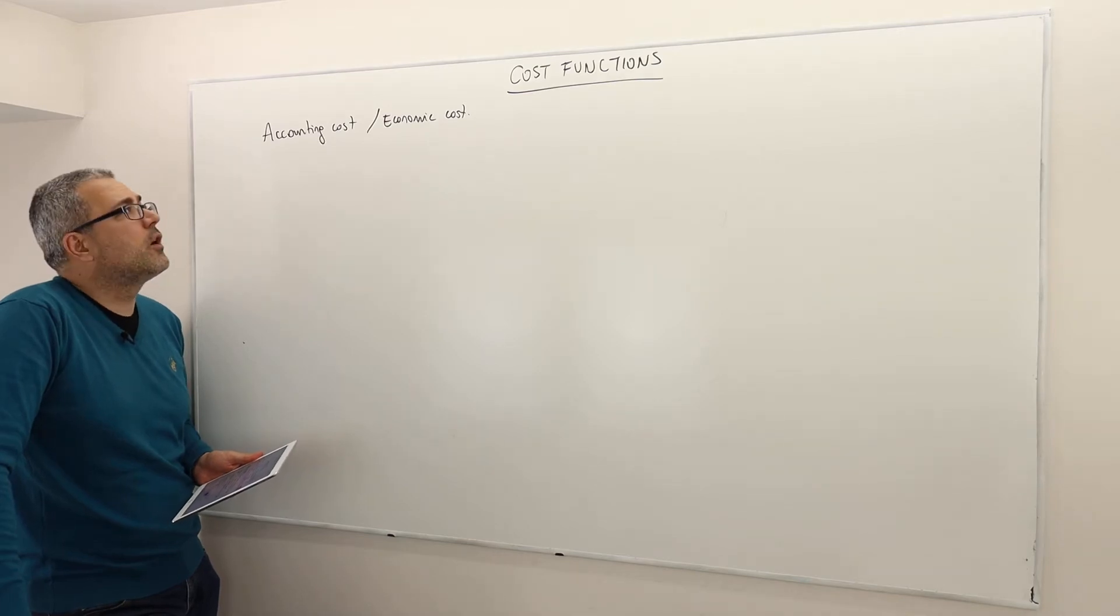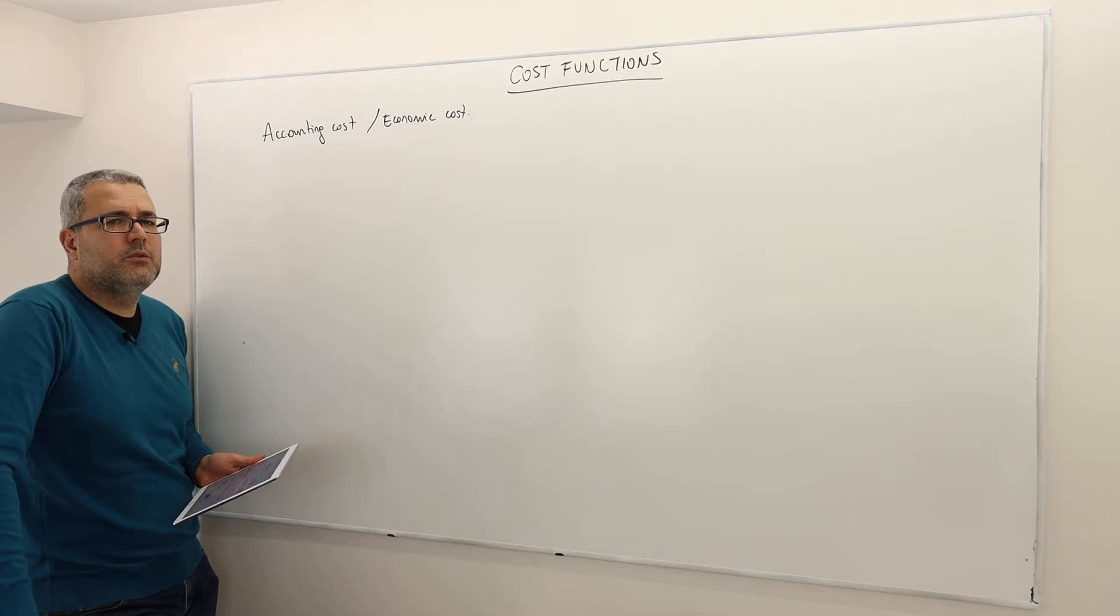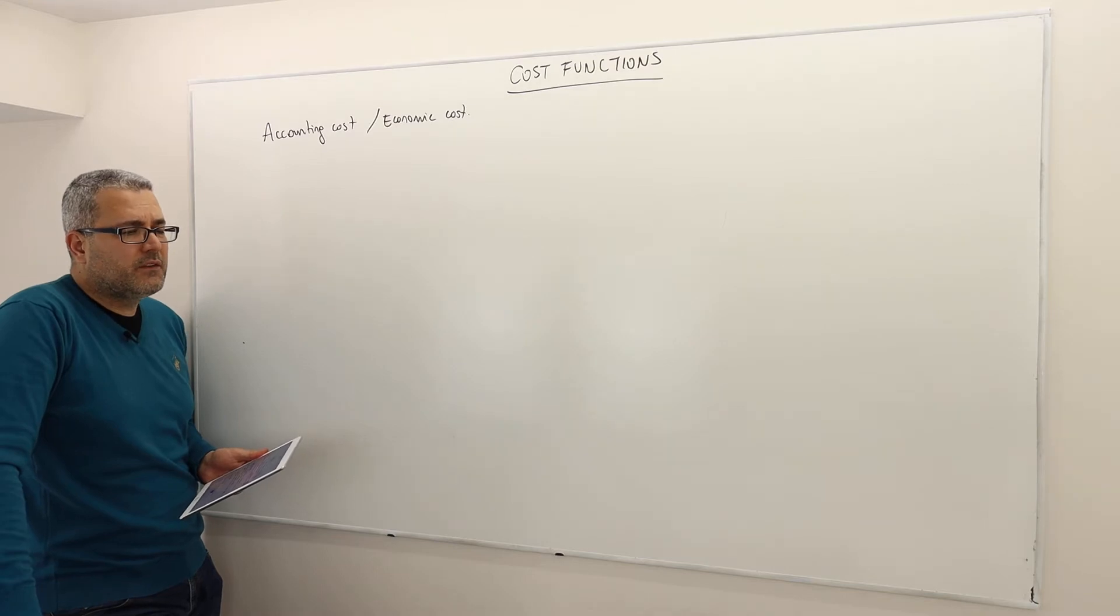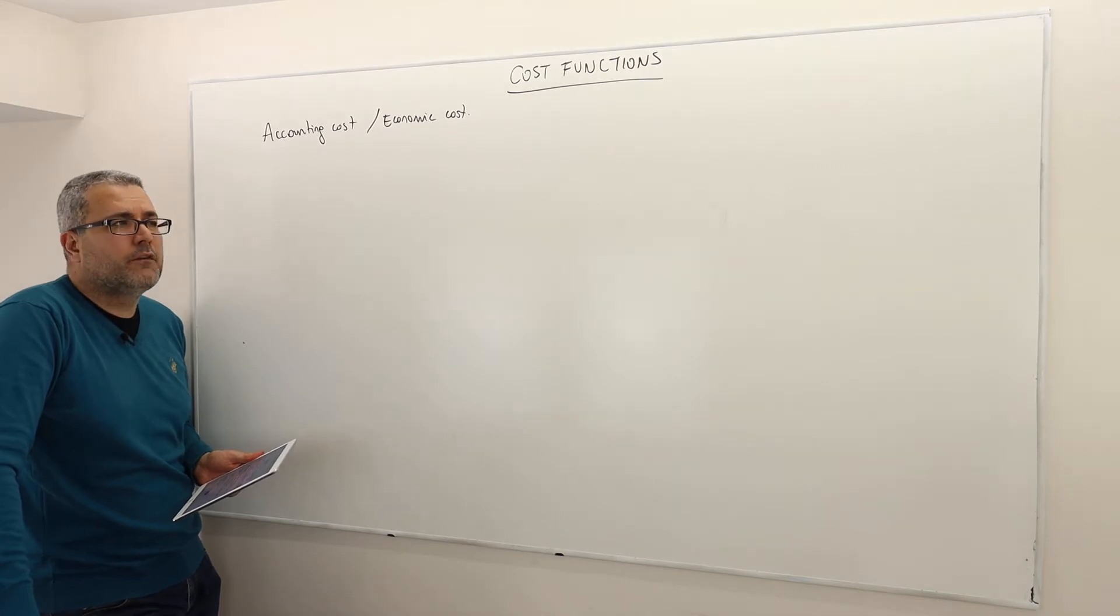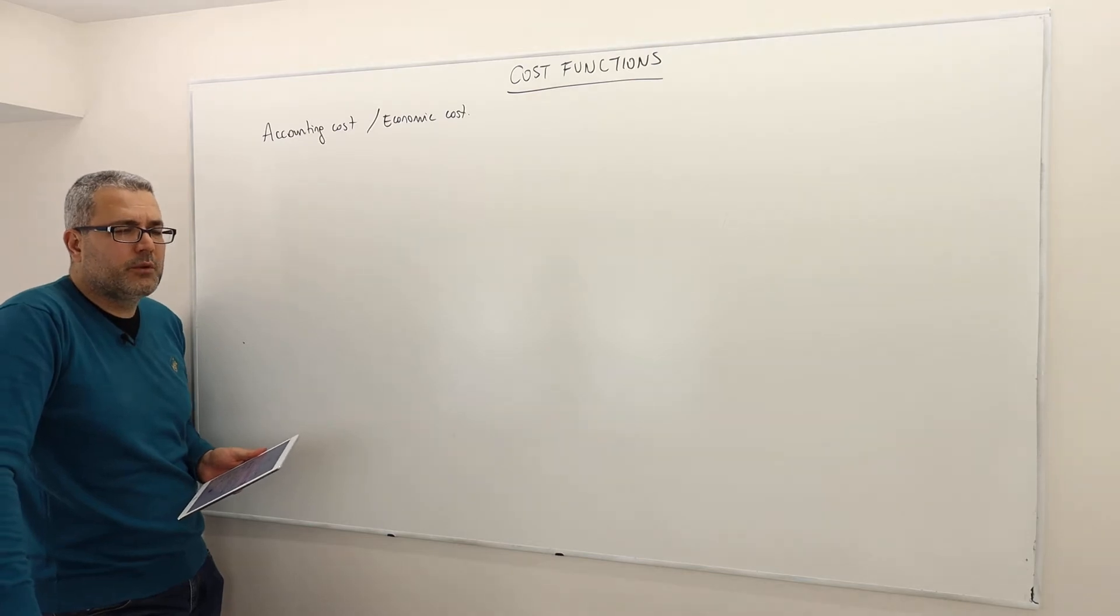But what about economic cost? Economic cost is always higher than, or maybe equal, but it's never less than accounting cost. So economic costs include what we call opportunity costs. Why do we include opportunity costs into economic costs? Because it makes the comparisons much easier. Because the economic costs already includes the opportunity cost. Opportunity cost is basically the benefit of the second best alternative. So when you compare whether to produce something or not to produce, or when you calculate the profit.